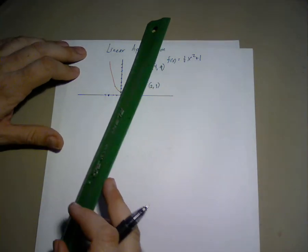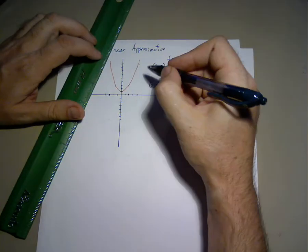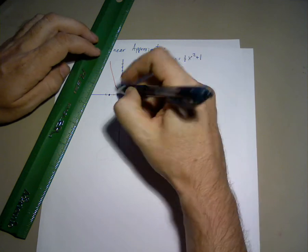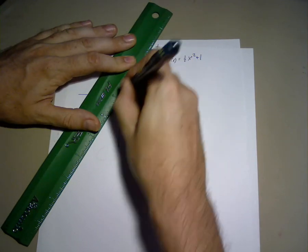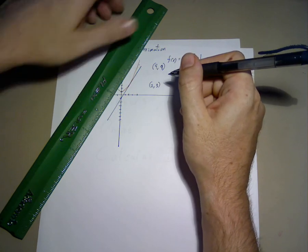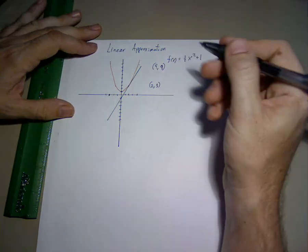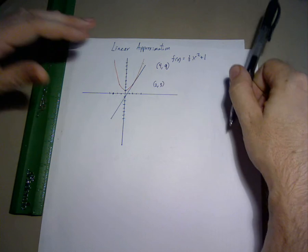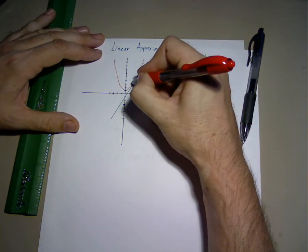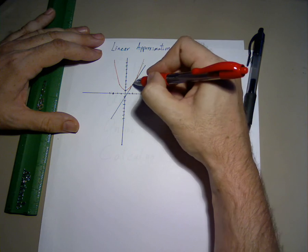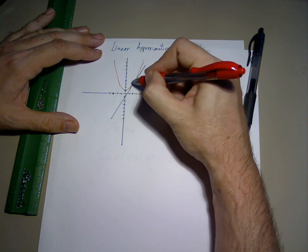For instance, the tangent line to (2,3) will look like this. And so we can say that in the region approximately, I'll say roughly from here to here, we have a rough idea of what the correct value is.